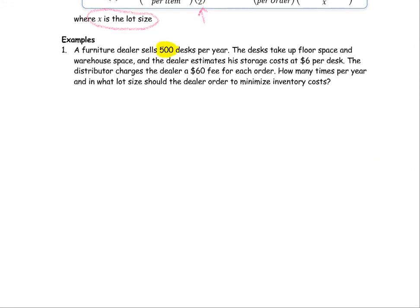From the problem: 500 desks per year - so the entire year total is 500. They take up floor space, warehouse space. The dealer estimates his storage costs at $6 per desk. The distributor charges the dealer a $60 fee for each order. The question asks: how many times per year and in what lot size should the dealer order to minimize the inventory cost? The goal is to minimize the value of the cost.